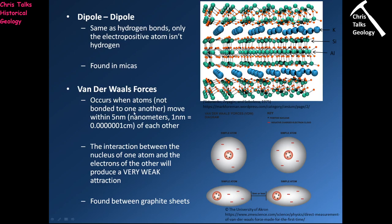Van der Waals forces occur when you have atoms not bonded to each other — no electron has been exchanged — that move within five nanometers of each other, which is very small. At that distance, the nucleus of one atom, which is positively charged, will start to attract the electrons of the adjacent atom, producing a very, very weak attractive force. Van der Waals forces are most commonly seen in minerals like graphite.